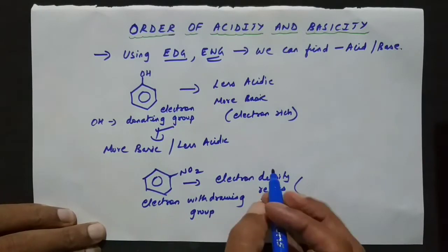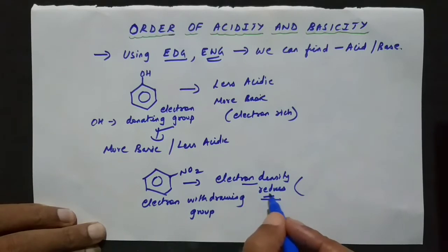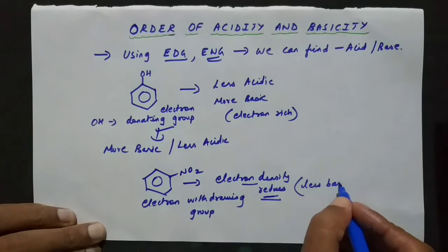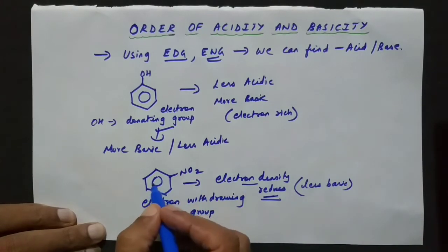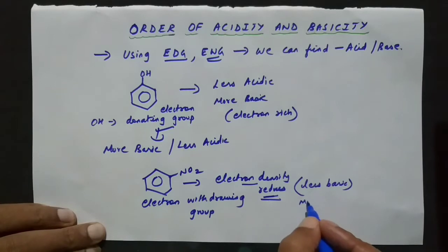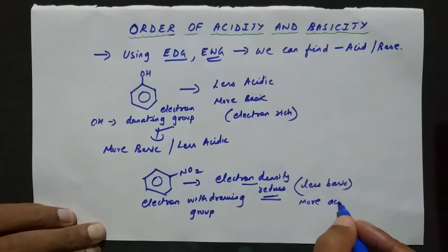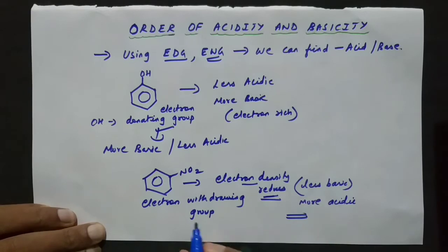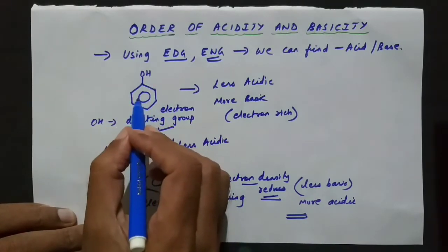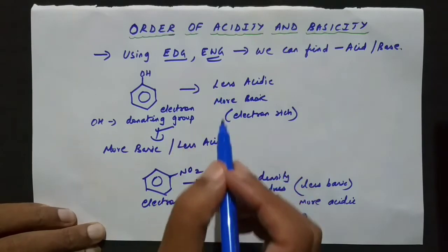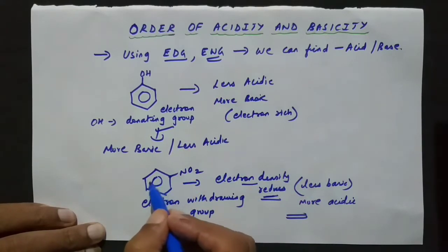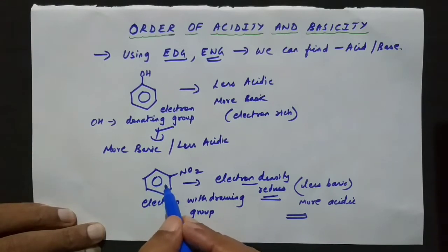Basicity is all about the electrons. Whenever the electron density reduces, the compound will be less basic. And because of the less electron density, H⁺ can move very easily, so it will be more acidic. So electron-donating groups make the benzene electron-rich, making it more basic and less acidic. And electron-withdrawing groups decrease the electron density, making it less basic and more acidic.